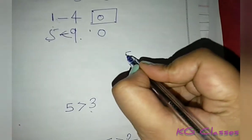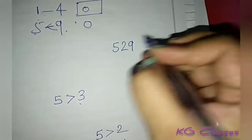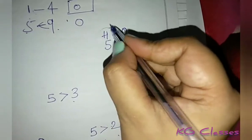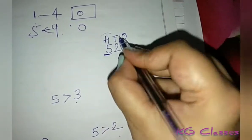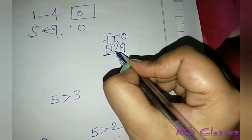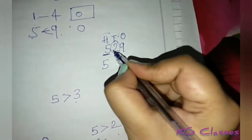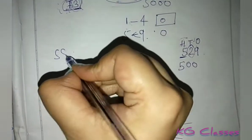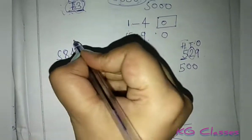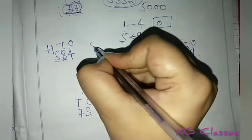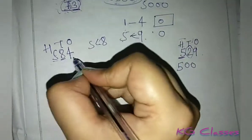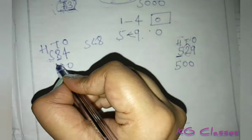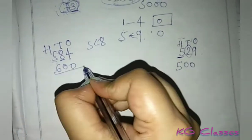Like any digit — we have 529. We will differentiate it in places: ones, tens, hundreds. We have to do rounding to the nearest 100, so we look at the tens place. The tens digit is 2, which is less than 5, so the hundreds place stays as it is and the rest of the places become 0. Now take 584: ones, tens, hundreds. The tens digit 8 is greater than 5, so 1 is added to the hundreds place, making it 600.